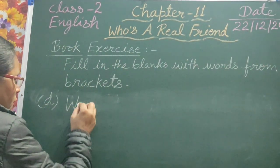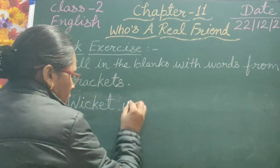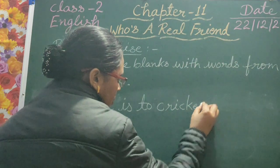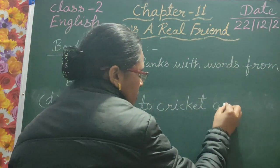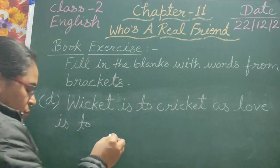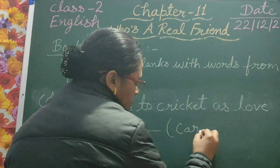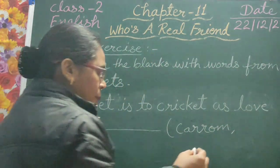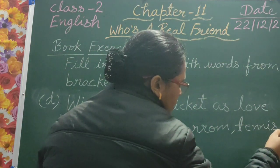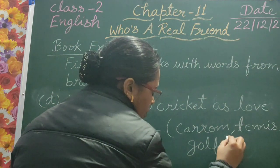Question D: Wicket is to cricket as love is to ___. The options given in the bracket are: carom, tennis, and golf. Wicket is a term that relates with cricket — cricket is an outdoor game. In the same way, the word 'love' relates with tennis.